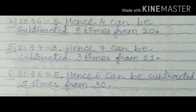Number 6: 30 divided by 6 is equal to 5. If we divide 30 by 6, the answer is 5. Hence, 6 can be subtracted 5 times from 30. This means we can subtract 6 from 30 five times. Do you understand students? Let's see the next question: Fill in the empty space — write the answer in the empty space given.